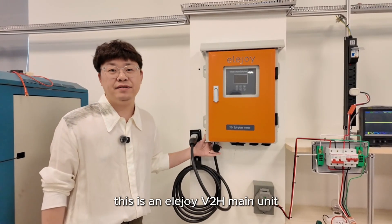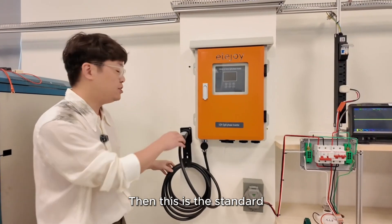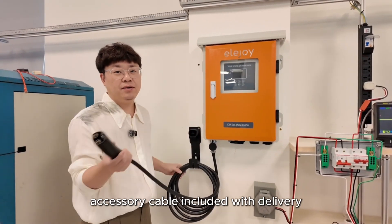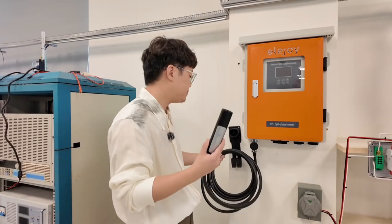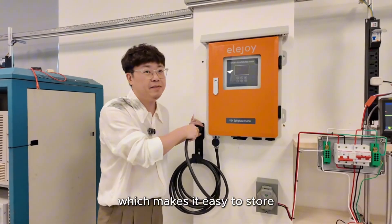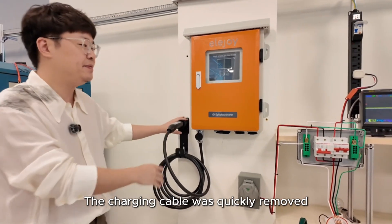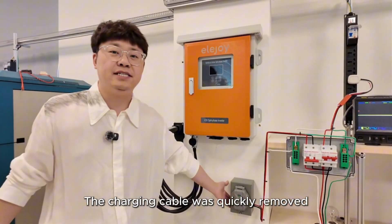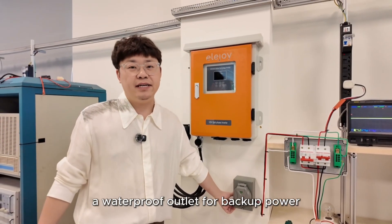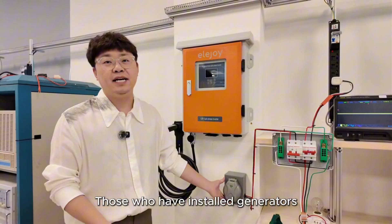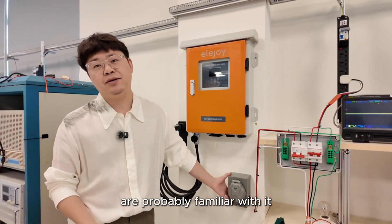First, this is an Elijoy V2H main unit and this is the standard accessory cable included with delivery. This is a cable holder which makes it easy to store. The charging cable was quickly removed and here is the waterproof outlet for backup power. Those who have installed generators are probably familiar with it.